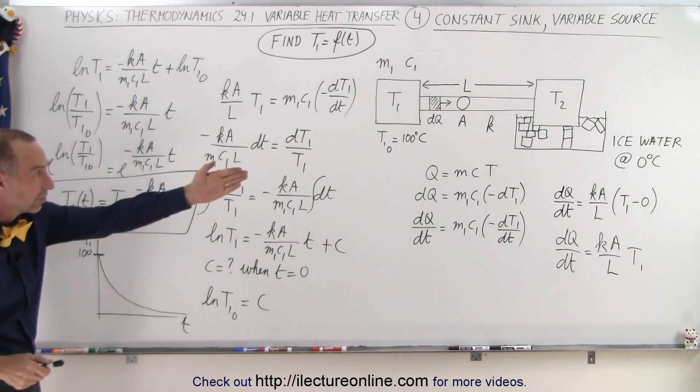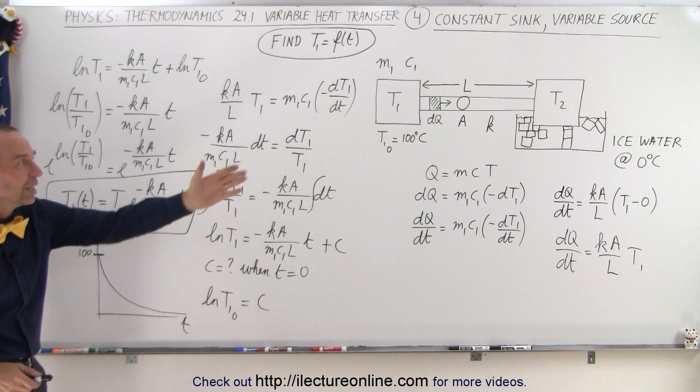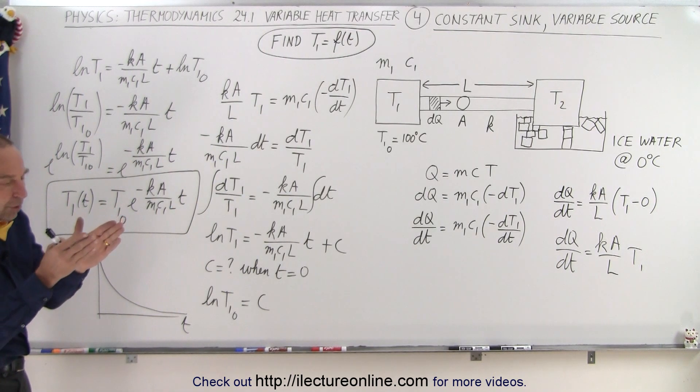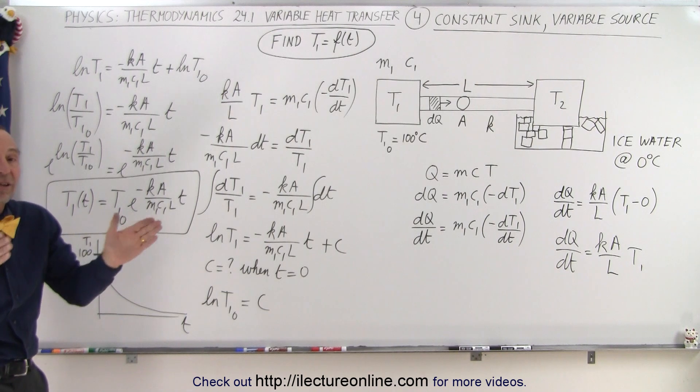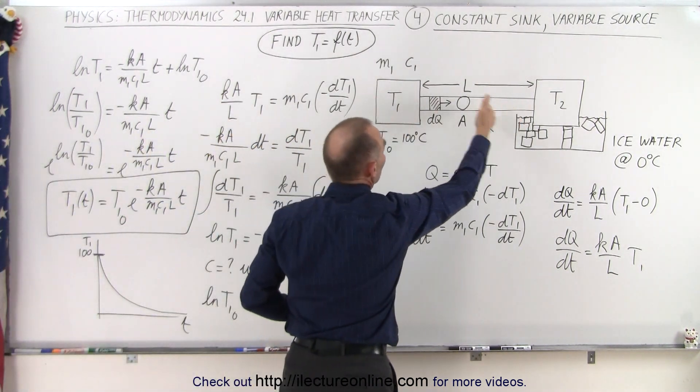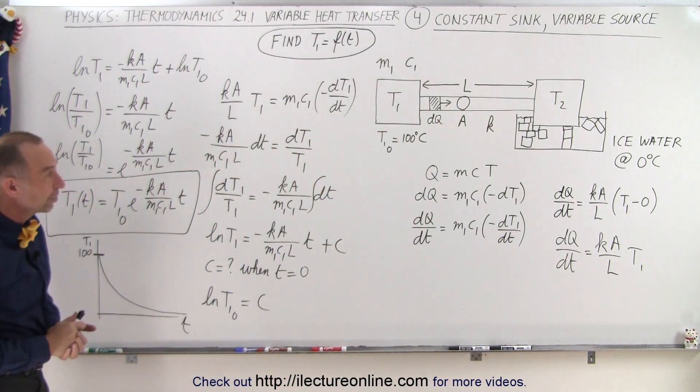So this is the example where the sink is kept constant and the source can slowly drop in temperature as heat is being transferred. Also realize that as the temperature decreases over time, or at least the difference in the temperature decrease over time, the amount of heat being transferred across will decrease proportionally as well. And that's how it's done.